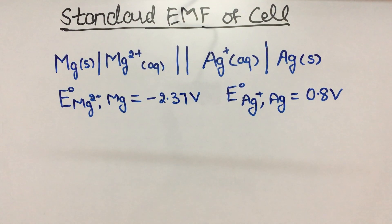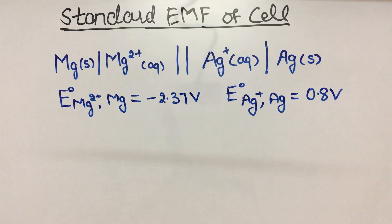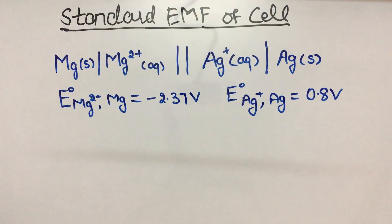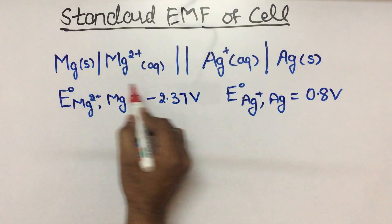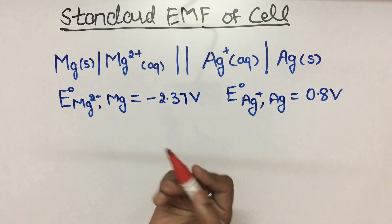Hello students! Today we will remember a trick to easily calculate EMF of a cell. It's a trick to find anode and cathode, and it's very easy. If you observe this cell, I will tell you two tricks.